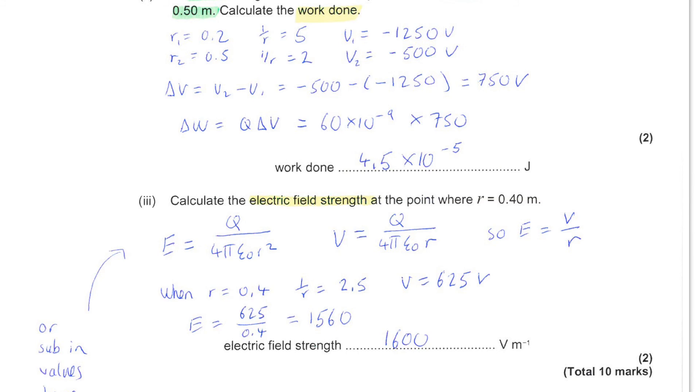Now, we know an equation for electric field strength. We also know an equation for potential, and just looking at these two equations, you can see how they relate to each other, and the electric field strength is simply the potential divided by the distance away from the charge.